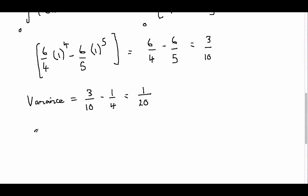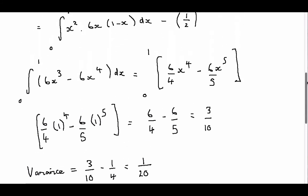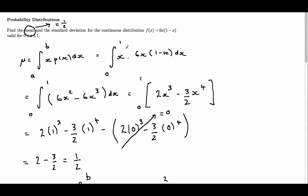Therefore the standard deviation is the square root of 1 over 20. And we have found both the standard deviation and our mean. So standard deviation is the square root of 1 over 20.